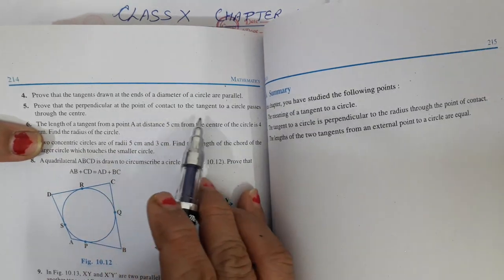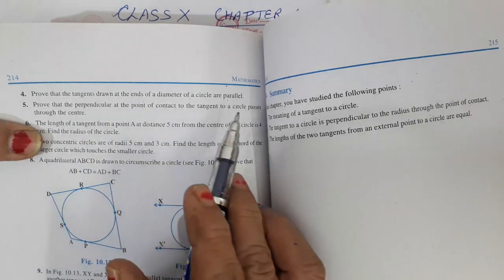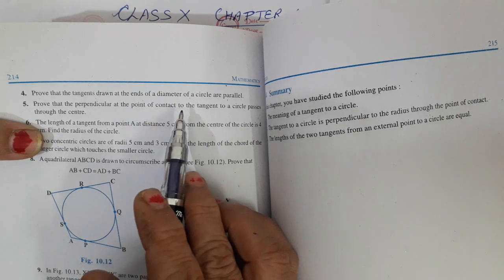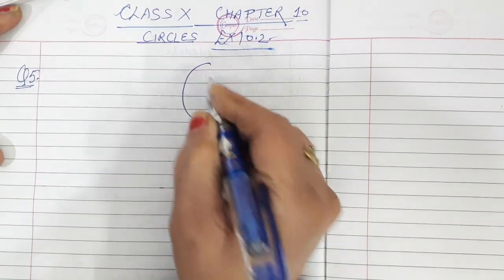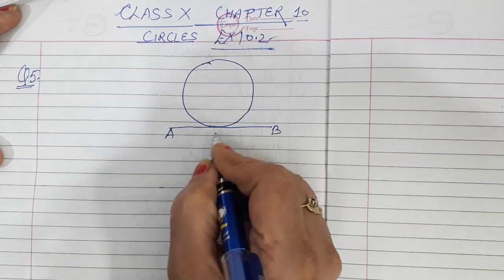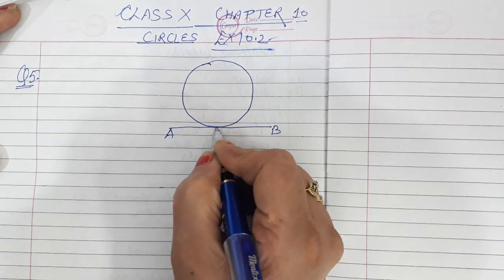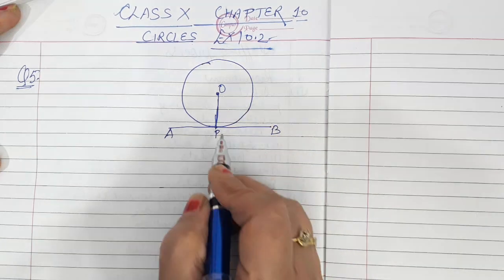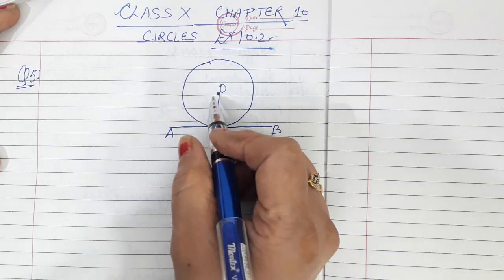We have to prove that the perpendicular at the point of contact to the tangent to a circle passes through the center. First, let us draw the figure. There is a circle with a tangent AB drawn on it. This tangent AB touches the circle at point P, and from point P we draw a perpendicular. We have to prove that this perpendicular drawn from the point of contact passes through the center.